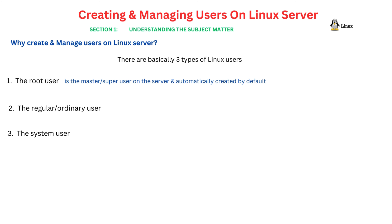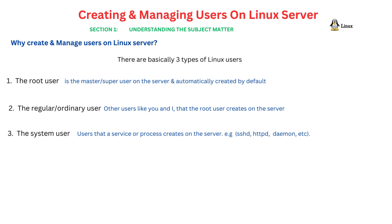The same thing applies to Linux: whenever you install the Linux operating system, the root user is automatically created. The second type is the regular user — users like you and me that the root user can create on the system. The third type is system users, which are automatically created by services or processes running on the system, for example the sshd user and the httpd user.